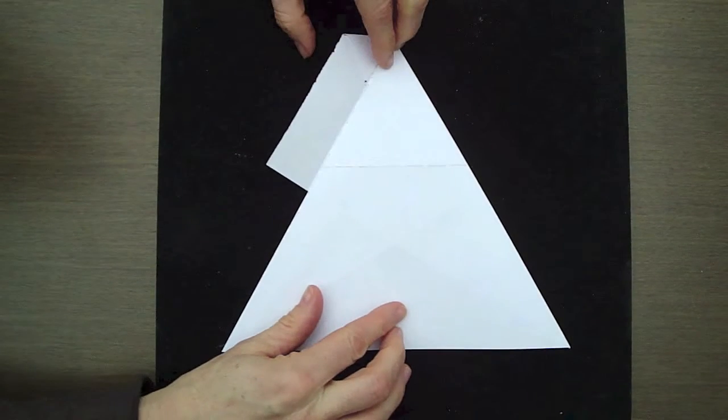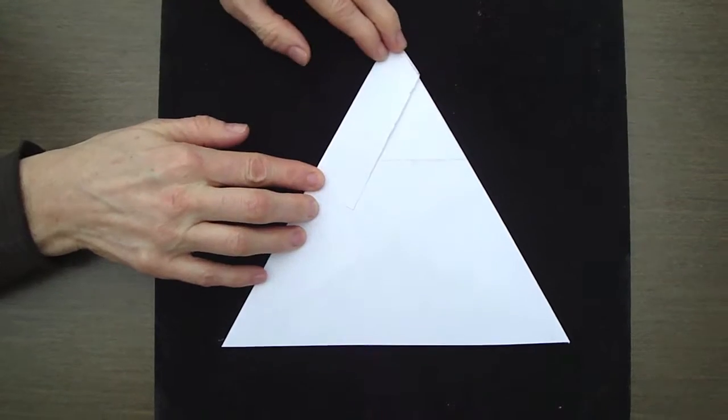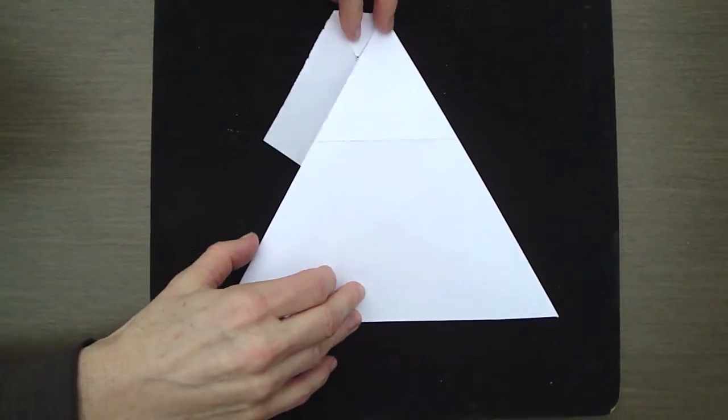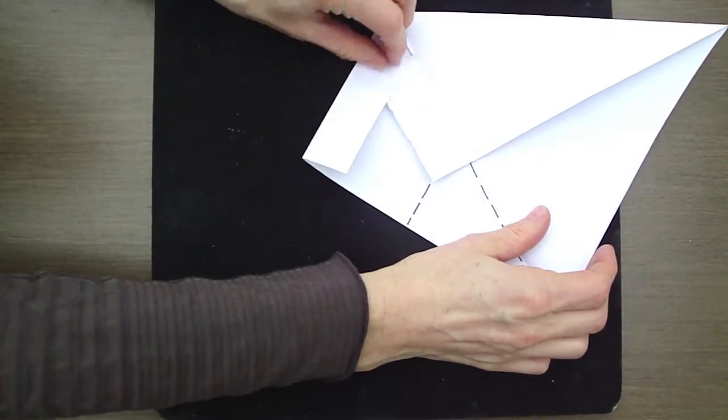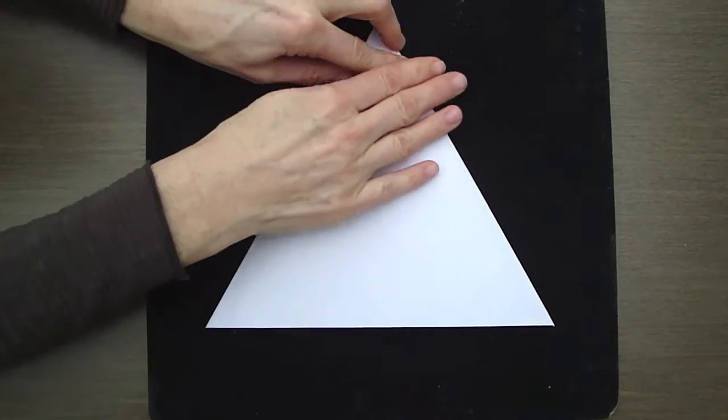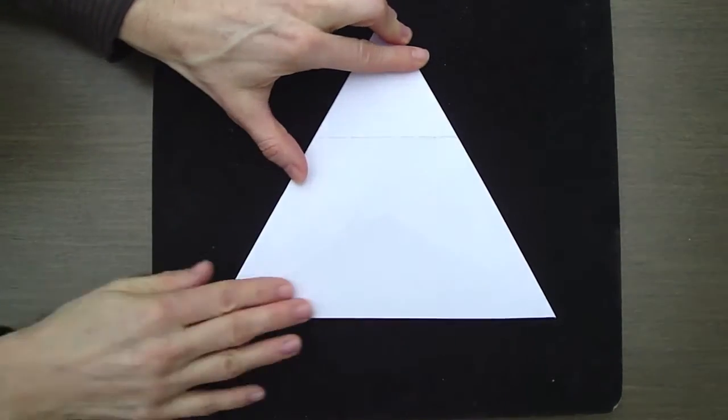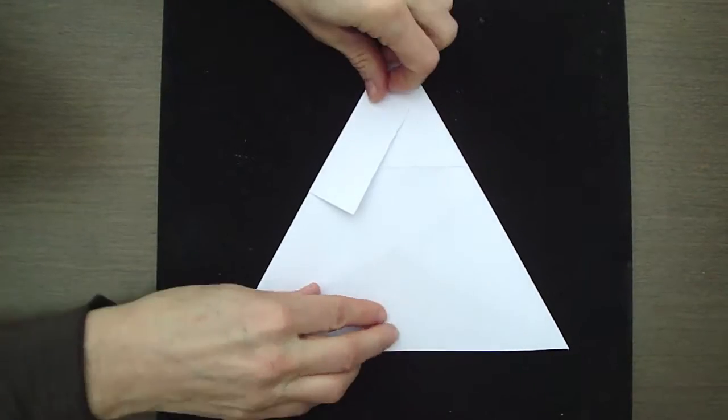Now fold in the flap on the top left hand side and tuck it in so that you're left with a perfect triangle. Like this. Here it is again.